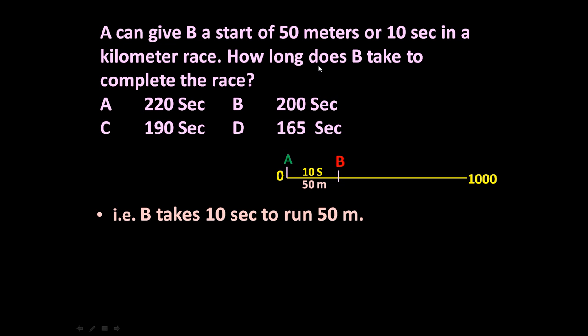Now the question is: how long does B take to complete the race? B takes 10 seconds to run 50 meters. Speed of B is given by distance upon time - distance is 50 meters, time is 10 seconds, so speed is 50/10 = 5 meters per second. This is the speed of B.